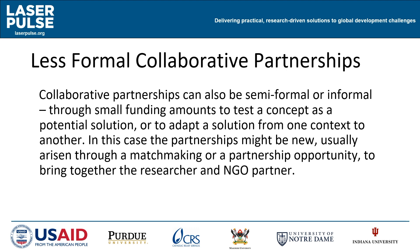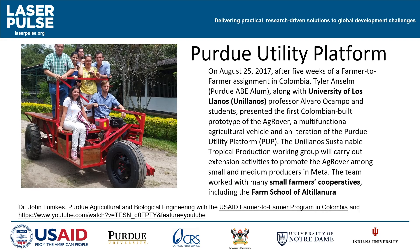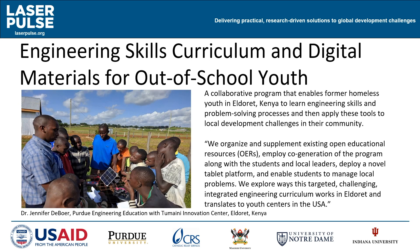Collaborative partnerships can also be semi-formal or informal through small funding amounts to test a concept as a potential solution, or to adapt a solution from one context to another. In this case, the partnership might be new, usually arisen through a matchmaking or partnership opportunity. Examples include: a cloud-based emergency response system developed between Purdue and Catholic Relief Services; the Purdue Utility Platform developed in collaboration with a Colombian University and farmers cooperatives; and a collaborative program to engage former homeless youth in Kenya in engineering skills and problem-solving processes.